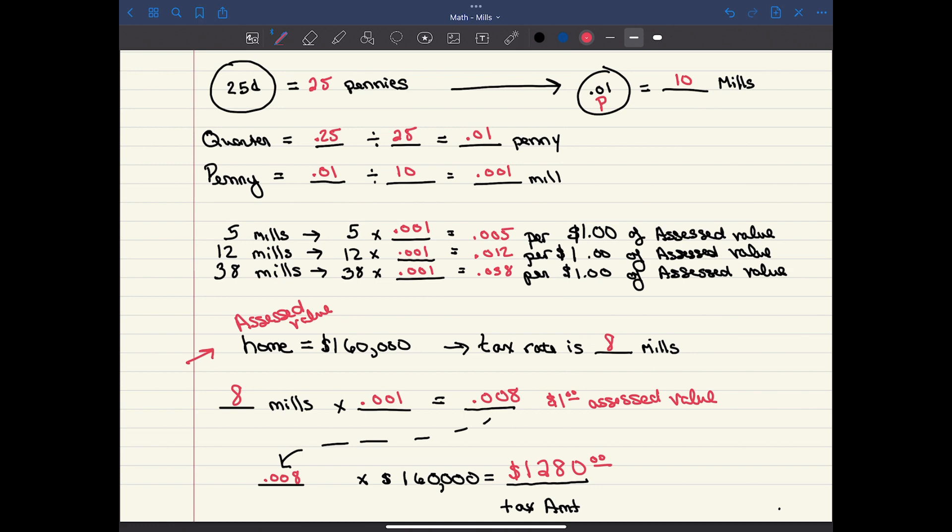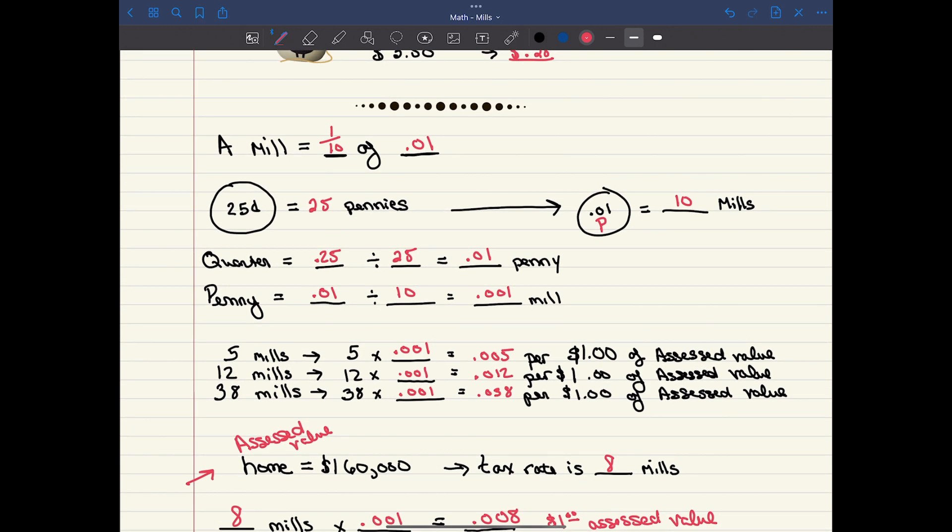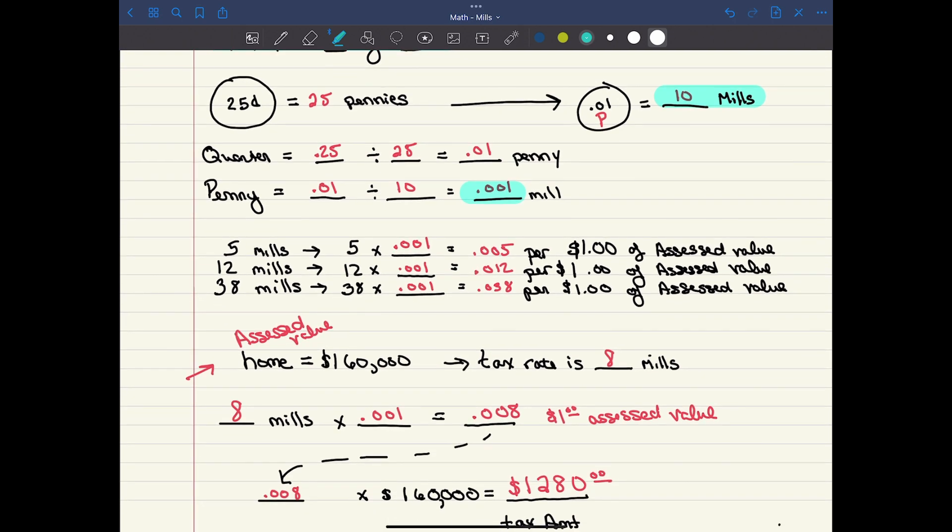So as a recap, let's talk about what we've learned. We know that a mill is worth one-tenth of one cent, meaning a mill is worth 0.001, and that there are 10 mills in one cent. All you need to do is take the number of mills and multiply it by 0.001 to get a rate that's going to be per dollar of assessed value, and then we're going to multiply by that assessed value, giving us a grand total for your taxes.